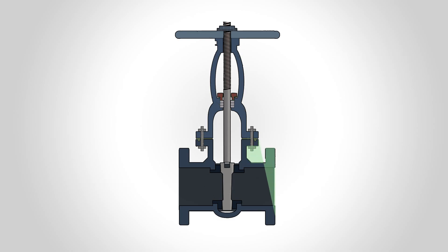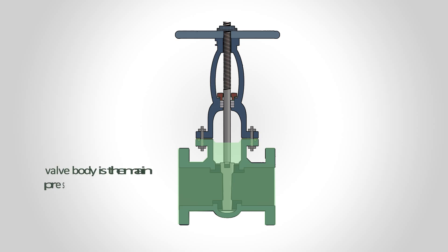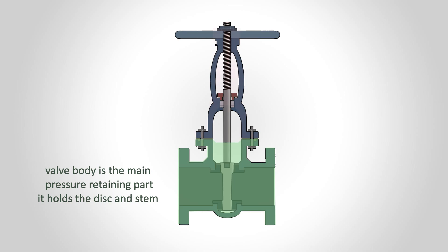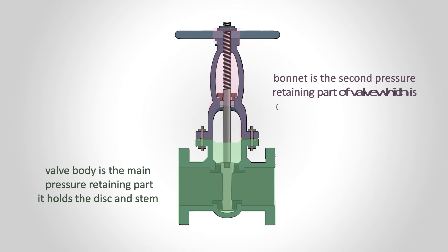The valve body is the main pressure retaining part — it holds the disc and stem. The O-nut is the second pressure retaining part of the valve, which is connected to the body by a bolting method.